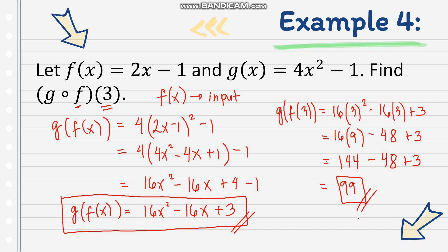So that is our answer, given f of x equals 2x minus 1, g of x equals 4x squared minus 1, and the value of x is 3. That's it for today. I hope you learned something about how to do composition of functions, as well as how to handle a given value of x. See you next time.